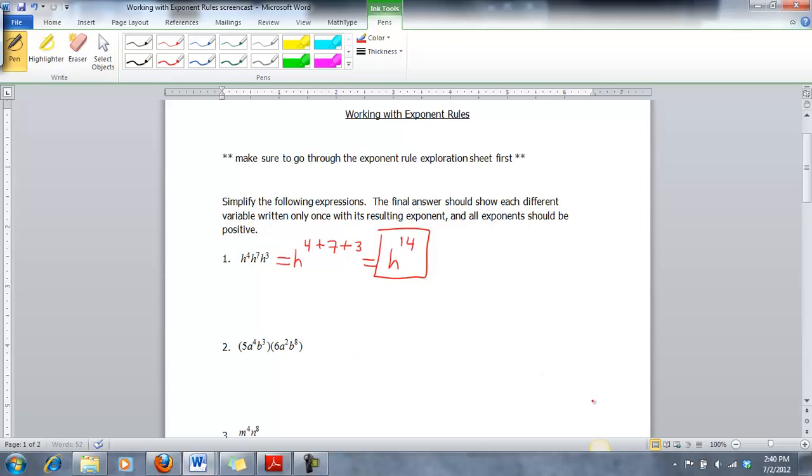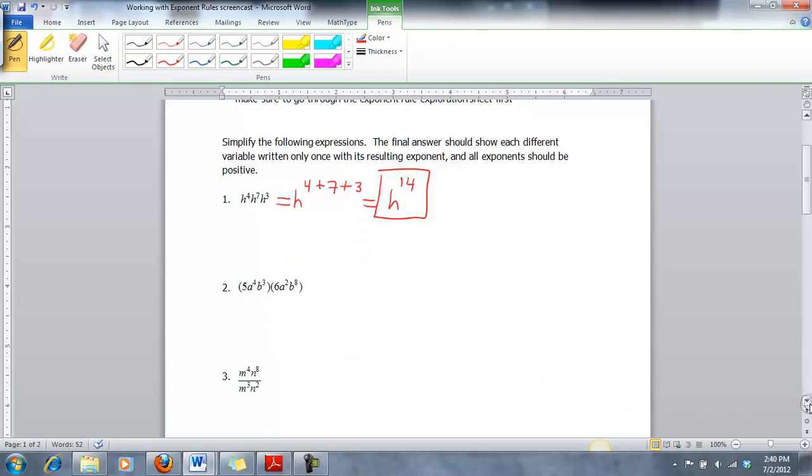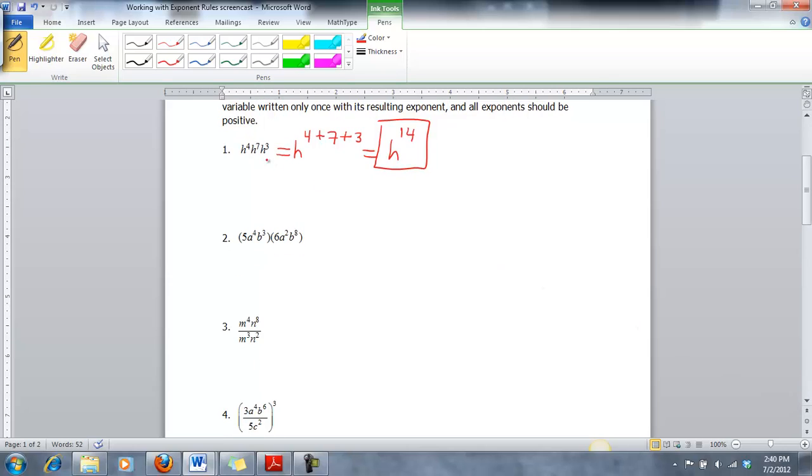Problem number two. I see two different variables on that one as well as some coefficients. We're going to multiply our coefficients together, since all these parentheses mean we're going to be multiplying. We're going to multiply five by six and that's going to give us thirty. Then I need to multiply my a's together and then my b's together. We can only have each variable written once. Again parentheses mean multiplying, so multiplying means we have to add those exponents. We'd have a to the four plus two and b to the three plus eight.